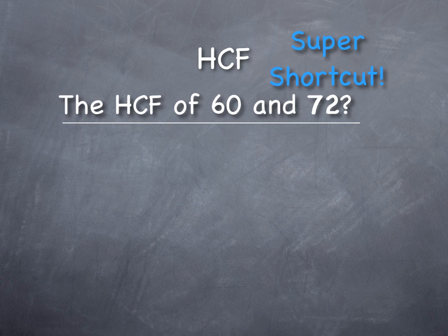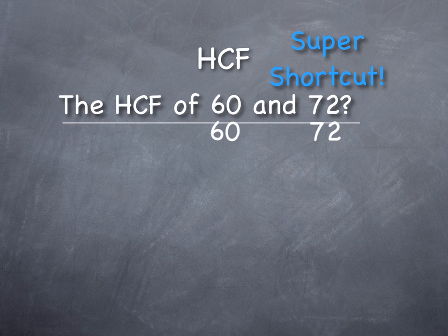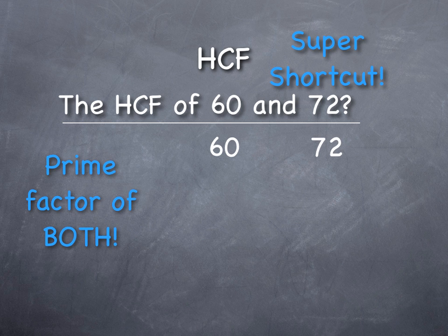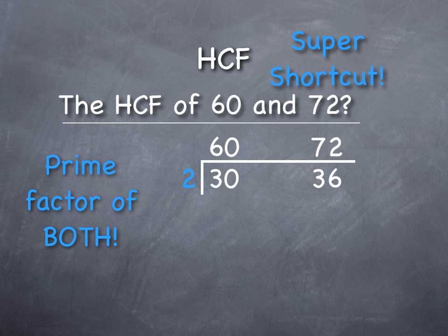But there is another way, we'll call it the super shortcut. It may not be shorter, it just depends. What we do is, just like our shortcut for finding the prime factors, we ask ourselves does the prime number two go into these numbers? And now it's a matter of do the prime factors go into both numbers? So I can't just say does two go into 60, I need to say does two go into both 60 and 72? And if it does, then we can do that just like we're doing our ladder kind of method.